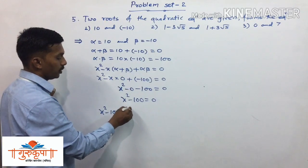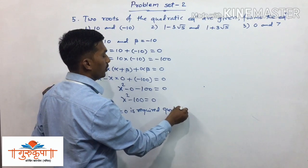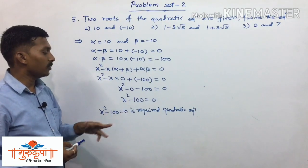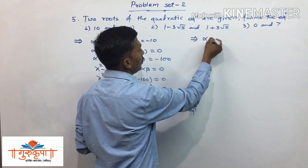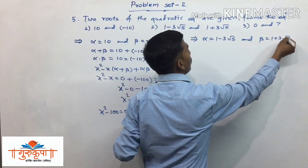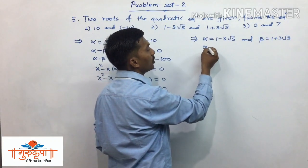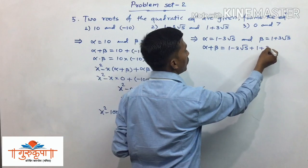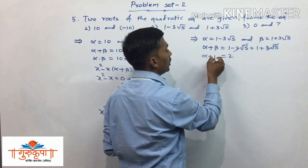So the required quadratic equation is x squared minus 100 equals 0. Now for the second example, we have alpha equal to 1 minus 3 root 5 and beta equal to 1 plus 3 root 5. We find the sum of the roots: alpha plus beta equals 1 minus 3 root 5 plus 1 plus 3 root 5. The terms negative 3 root 5 and positive 3 root 5 cancel, and 1 plus 1 is 2, so alpha plus beta equals 2.